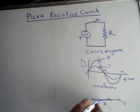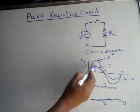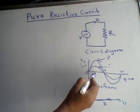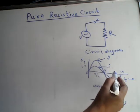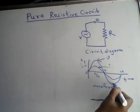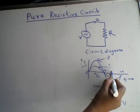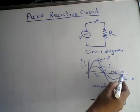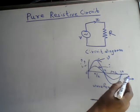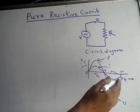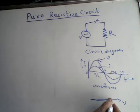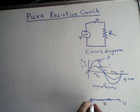Both are starting at the same time — there is no time difference between voltage and current, so they are in phase with each other. They reach the maximum value at the same time, that is pi/2, they reach zero at pi, the negative maximum at 3pi/2, and zero again at 2pi. So current and voltage are in phase, as represented in the phasor diagram.